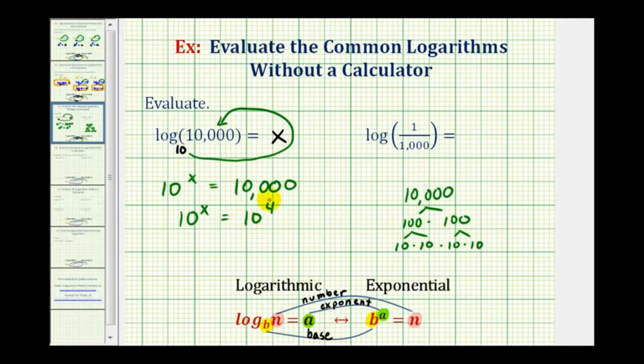A quick way to determine the exponent is to count the zeros. One followed by four zeros equals 10 to the fourth. Since 10^x = 10^4 and the bases are the same, x must equal 4. Therefore, log 10,000 equals 4.